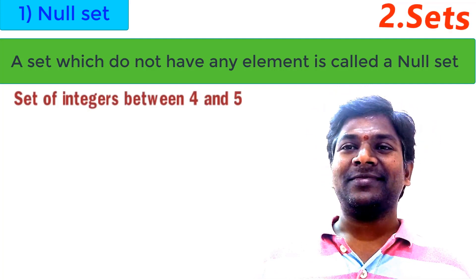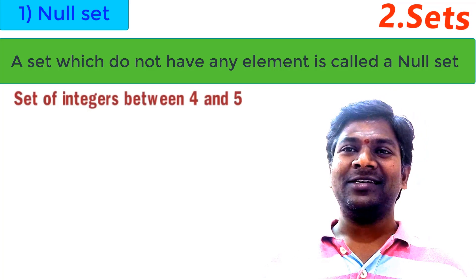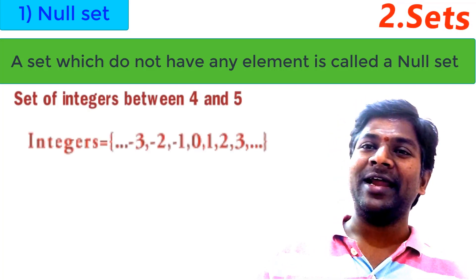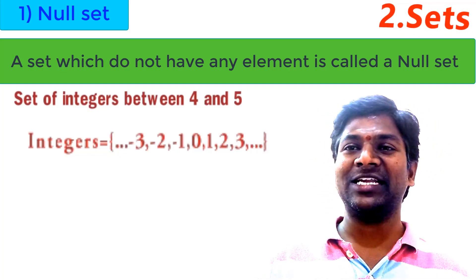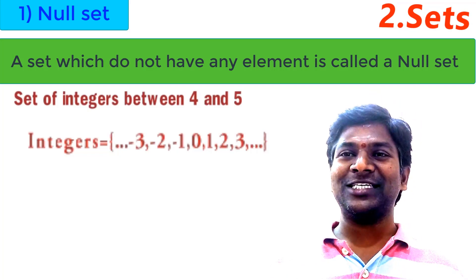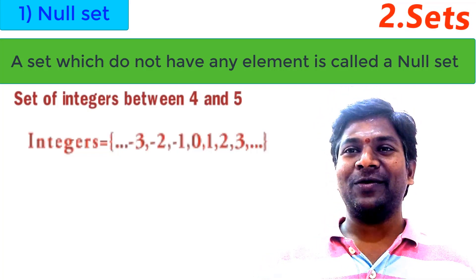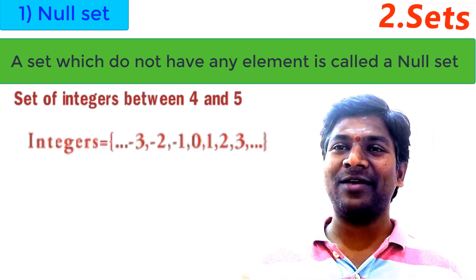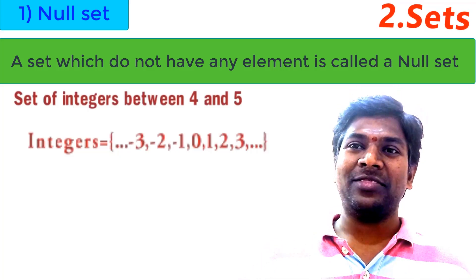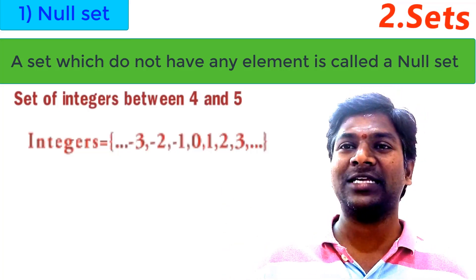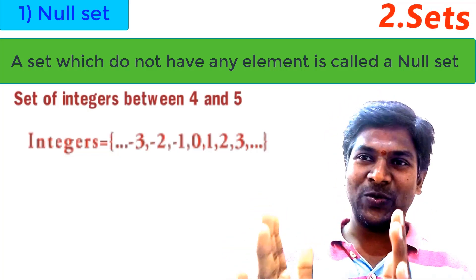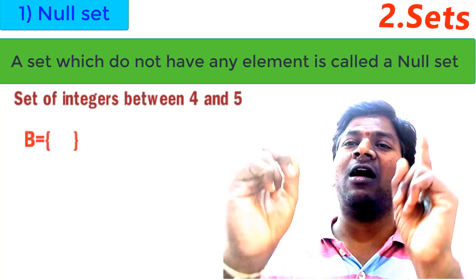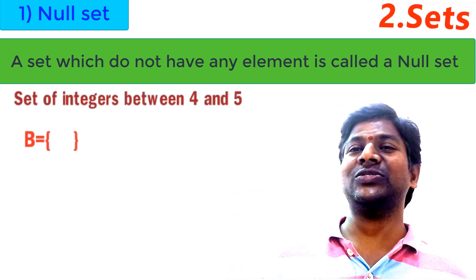Let us see one more example: integers between 4 and 5. The integers are: ...minus 3, minus 2, minus 1, 0, 1, 2, 3, 4, 5... — positive integers, negative integers and 0. What are the integers between 4 and 5? Since 4 and 5 are consecutive integers, after 4 we get 5. There are infinite rational numbers and decimal numbers between them, but no integers. So set of integers between 4 and 5 is also an empty set.